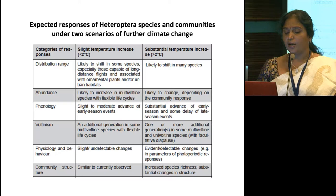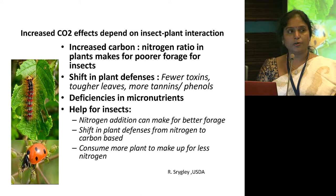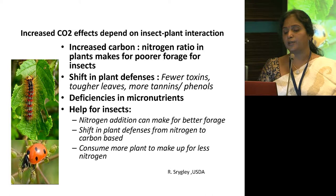Increased CO2 effects depend on insect-plant interaction because increased carbon-to-nitrogen ratio in plants makes poorer forage for insects. Shifts in plant densities, fewer toxins, tougher leaves, more tannins and phenols are expected because of changing CO2 concentration. This will lead to micronutrient deficiencies, and when nitrogen is applied indiscriminately it will also increase insect feeding.